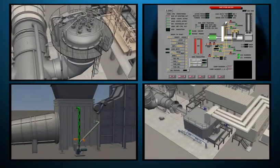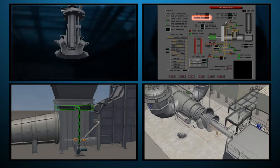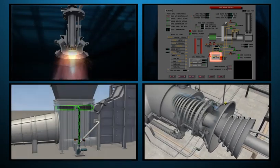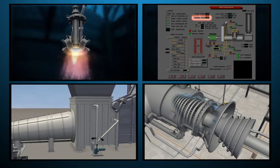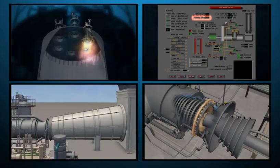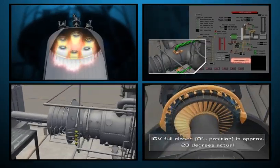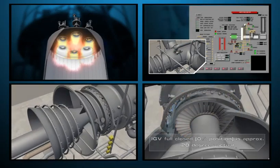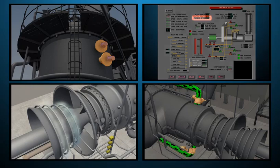The TTP Siemens V84.2 Gas Turbine course covers design, flow paths, function, and operation of the different sections of the gas turbine and generator. The V84.2 Gas Turbine is a 128-megawatt unit that utilizes two unique silo-style combustors.